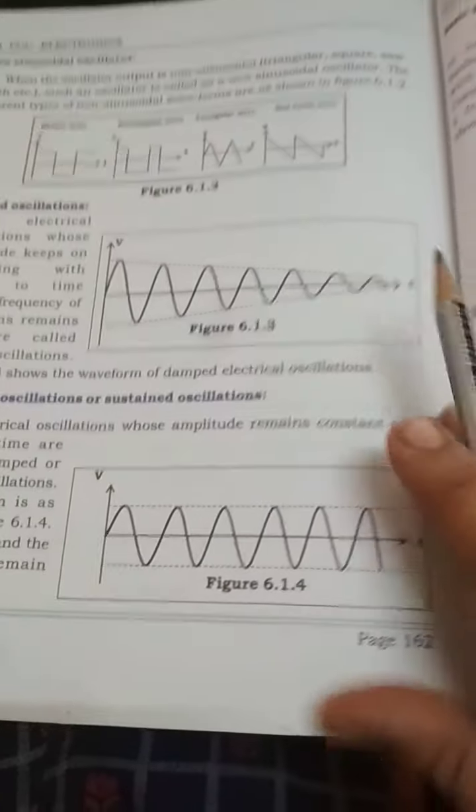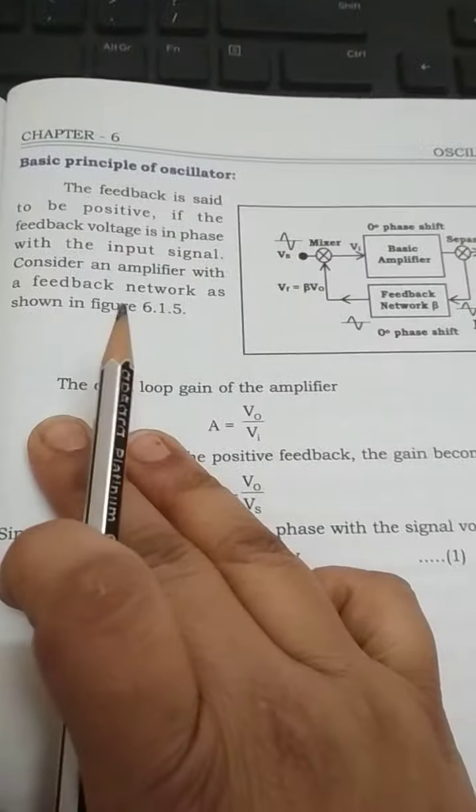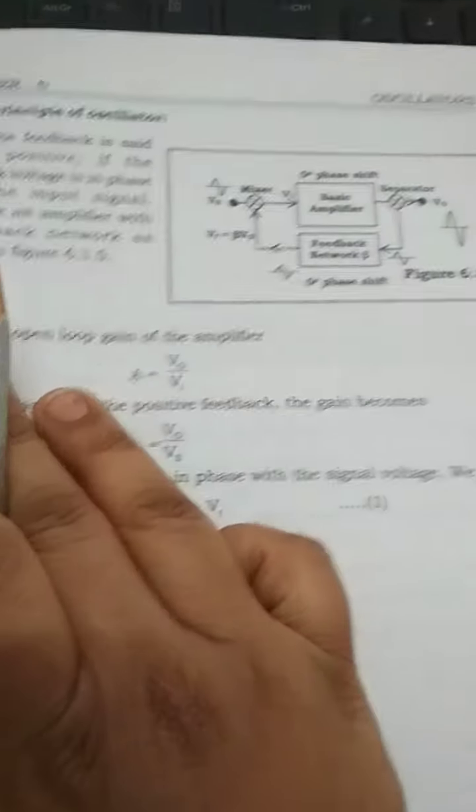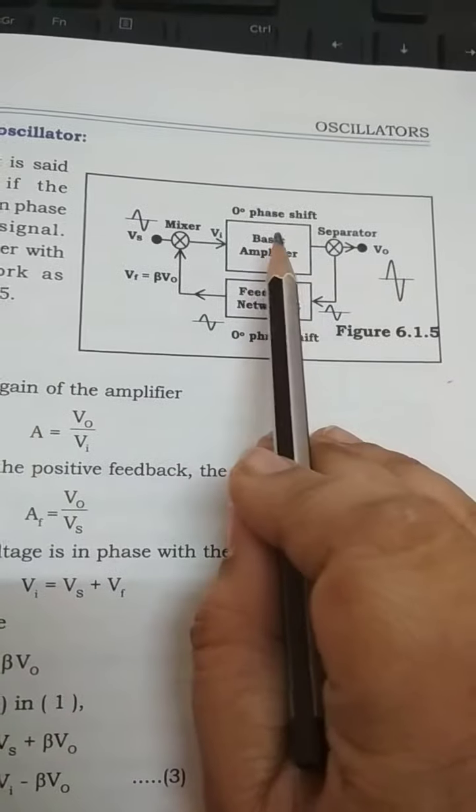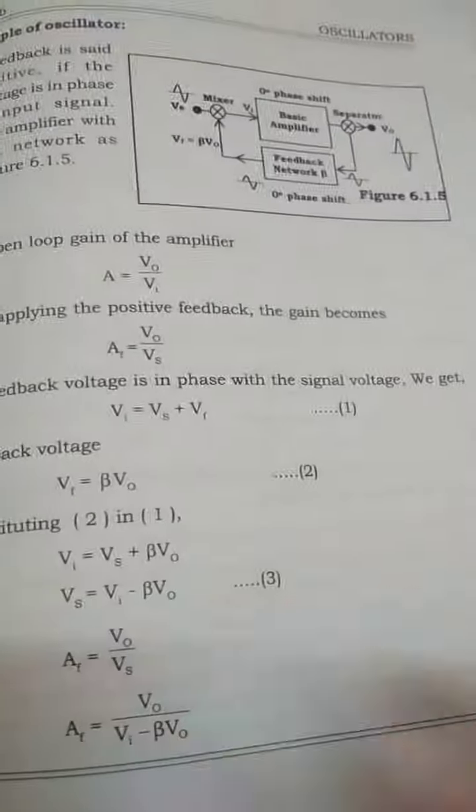For this the oscillator uses positive feedback. In the next session we will see what is the basic principle of the oscillator. As you can see there is a basic amplifier and a feedback network, but here we will be providing a positive feedback.